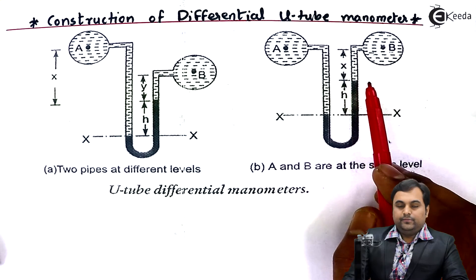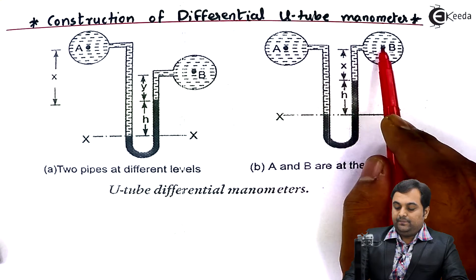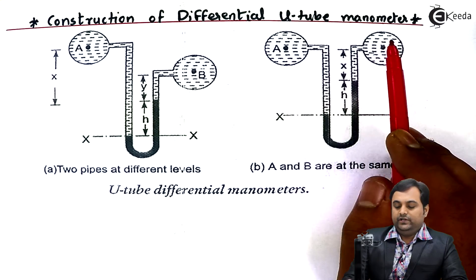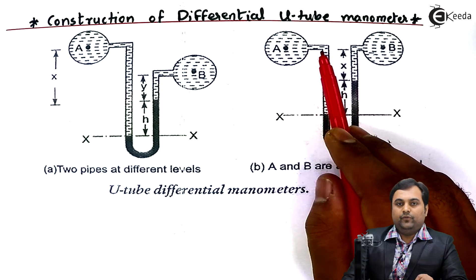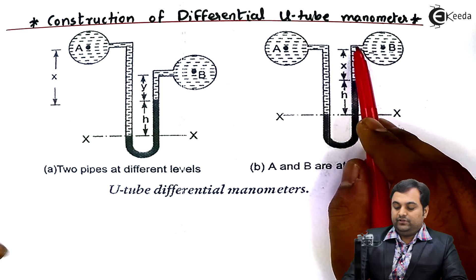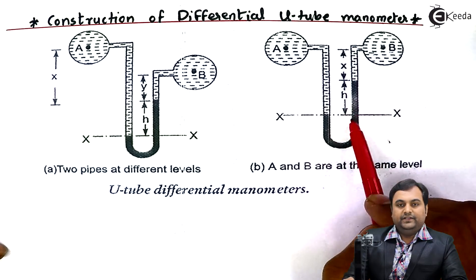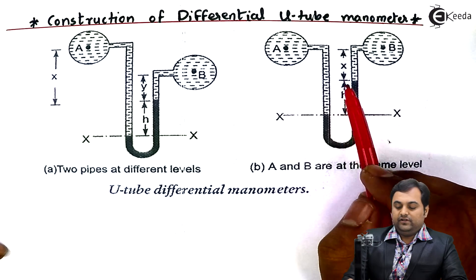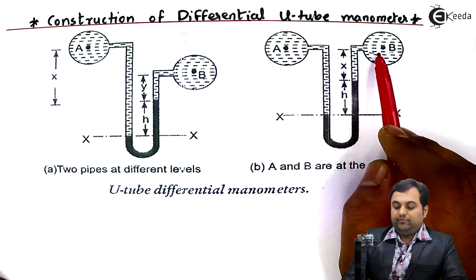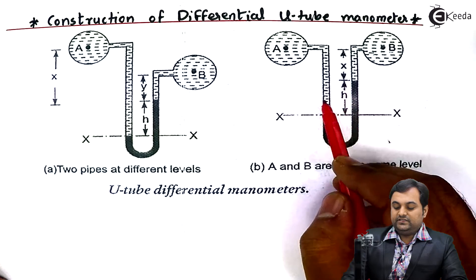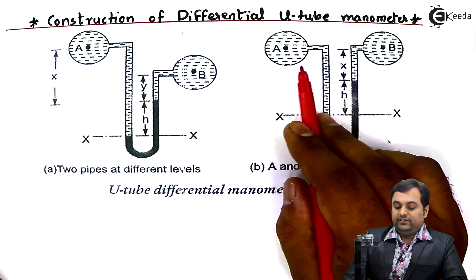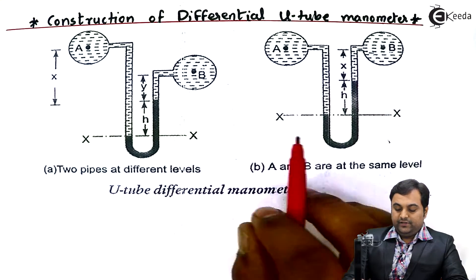In figure B, both pipelines A and B are at the same level. These two pipes can contain the same liquid, so the density would be the same for both fluids. In the left limb the fluid enters, and from the right limb it also enters. The mercury is balanced, and H represents the difference in mercury level. Here x is the distance from the mercury level to the center of pipes A and B.